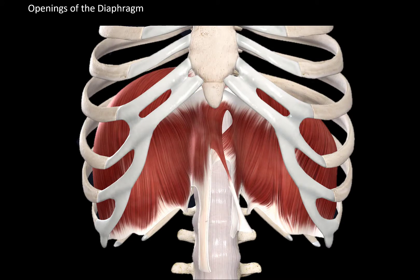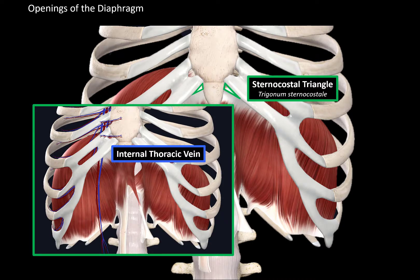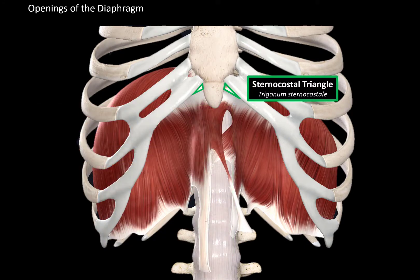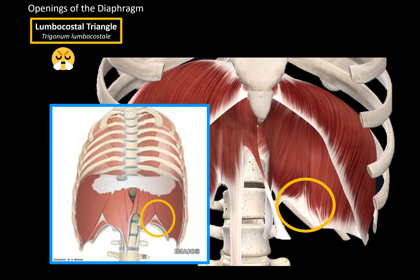The sternocostal triangle is formed by the costal cartilage, the sternum, and the diaphragm. Through the sternocostal triangle pass mainly the internal thoracic vein and the internal thoracic artery. The lumbocostal triangle is actually a defect in the diaphragm — it is formed by the incomplete closure of the pericardioperitoneal canal, and is usually closed off by the pleuroperitoneal membrane. In sources it may be called the Bochdalek foramen. In adults, this opening is a potential site for diaphragmatic hernia, where part of the intestines can bulge into the thoracic cavity.